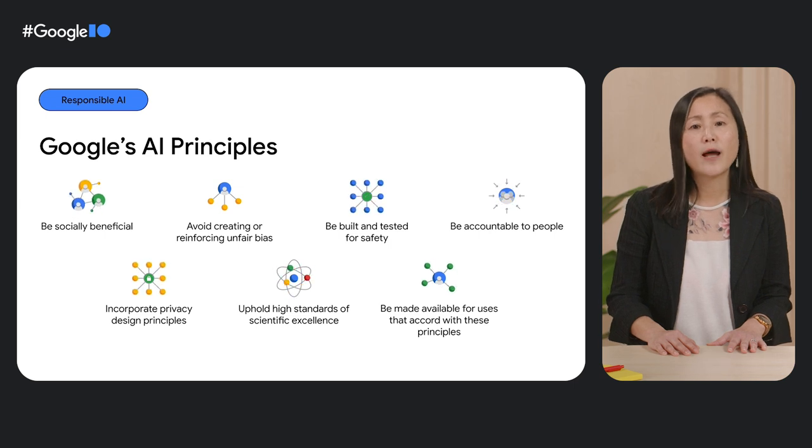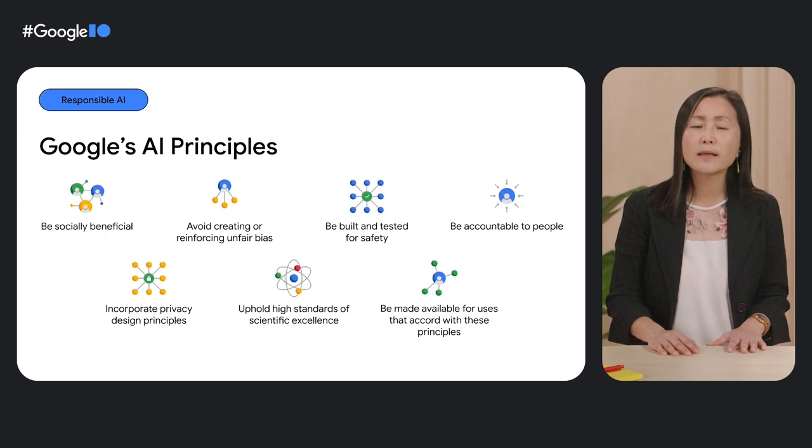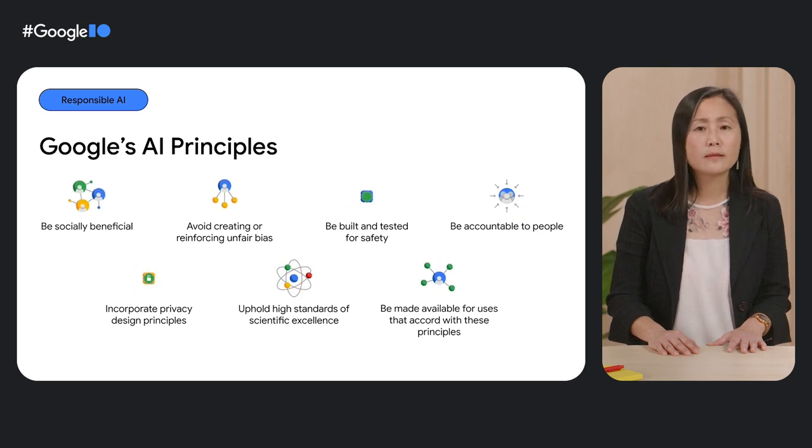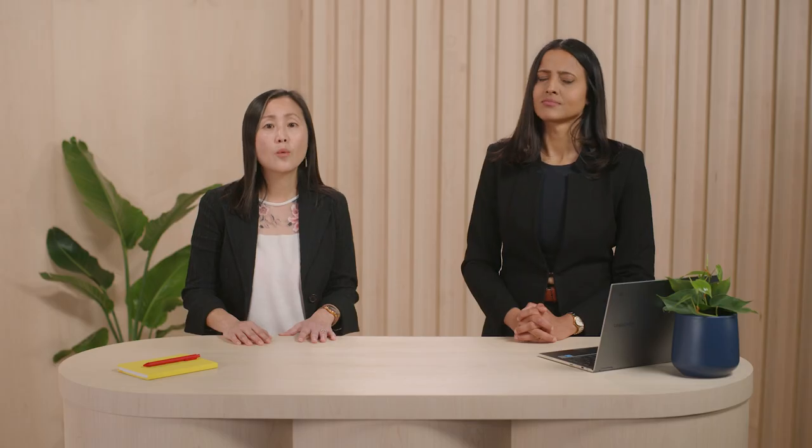Being accountable to people involves providing appropriate opportunities for feedback and relevant explanation. In our context, it means letting your users give you feedback and providing explanations when something goes wrong — and something will probably go wrong. Before we start building, let's take a step back. Like any good product development process, start early. Follow established UX methodology to understand the product use cases and understand your users.